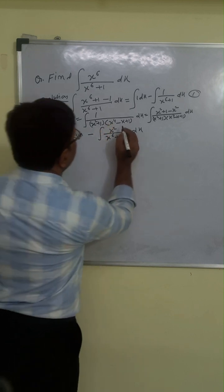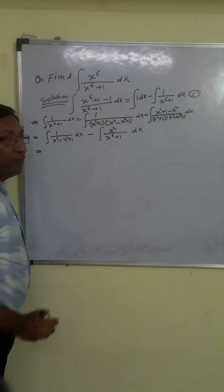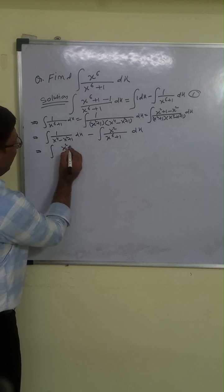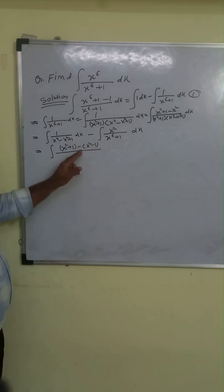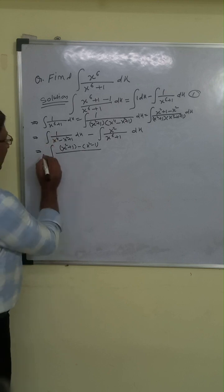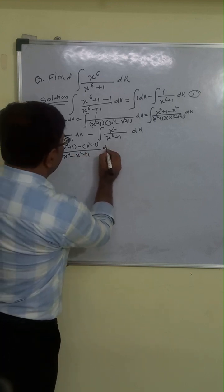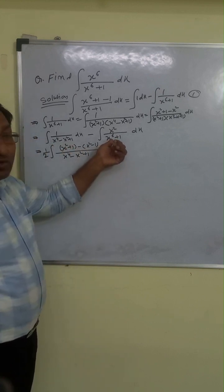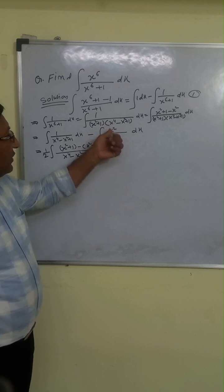We have 1 upon x⁴ minus x² plus 1. Note that x⁴ minus x² plus 1 can be adjusted: we write x⁴ minus x² plus 1 as x² plus 1 minus x² whole expression. We split it as x² minus 1 plus x². Since x² cancels, we get 1 by 2. So we split the integral with factor 1/2.